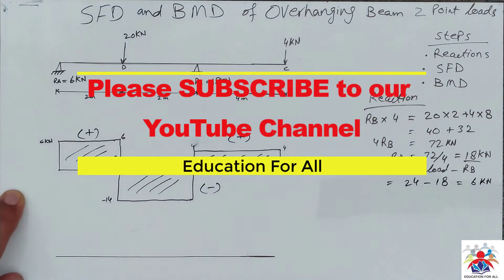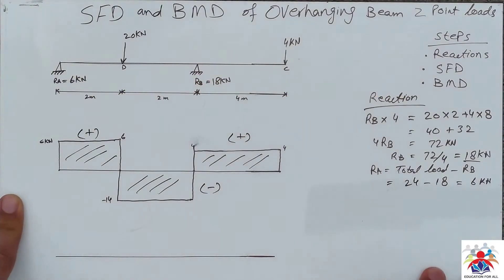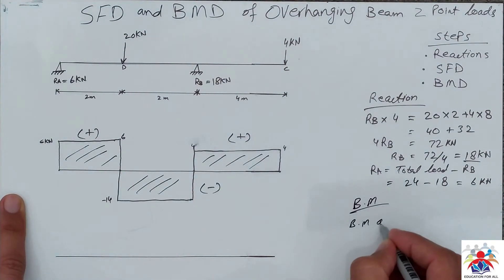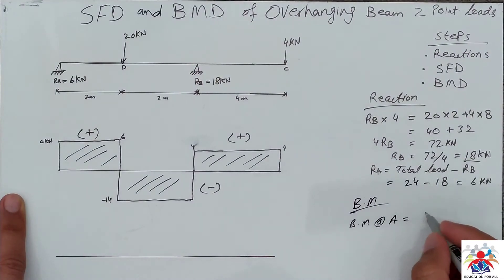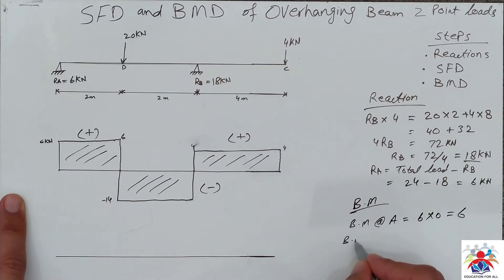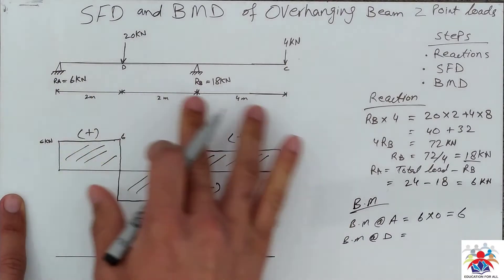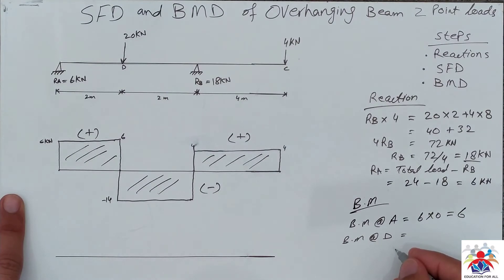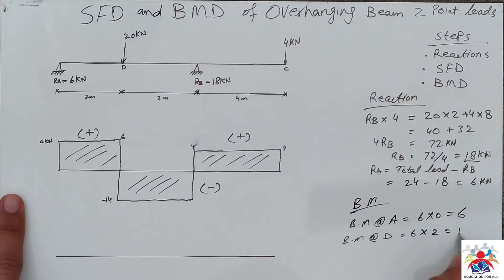Now we have to draw the bending moment diagram. Before drawing it, we calculate bending moment at each point. Bending moment at point A is zero. Bending moment at point D equals 6 multiplied by 2, which gives 12 kilonewton-meter. The points are named A, B, C, and D — focus on the point names.